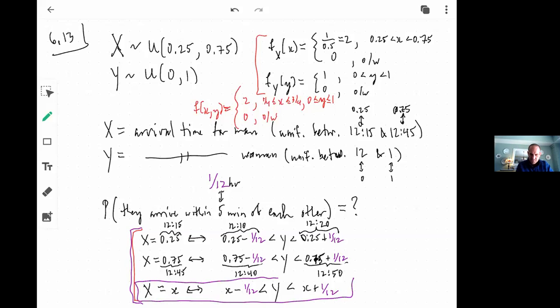Namely, that if X is anything, any of its valid numbers, then Y would have to arrive between X minus a twelfth and X plus a twelfth. And all of those are going to be legitimate options for Y because Y can be anywhere between 12 and one.